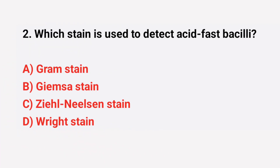Question number 2: Which stain is used to detect acid-fast bacilli? The right answer is option C: Ziehl-Neelsen stain.